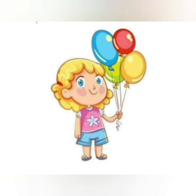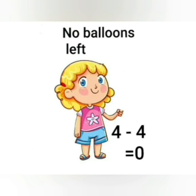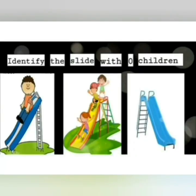Priya has 4 balloons with her. Let's count. 1, 2, 3 and 4. All the 4 balloons fly away from her. Now Priya has no balloons with her. So, we write this as 4 minus 4 is equal to 0. Now, it's time to solve few questions.